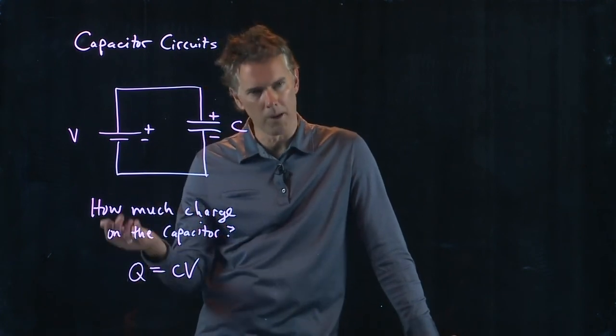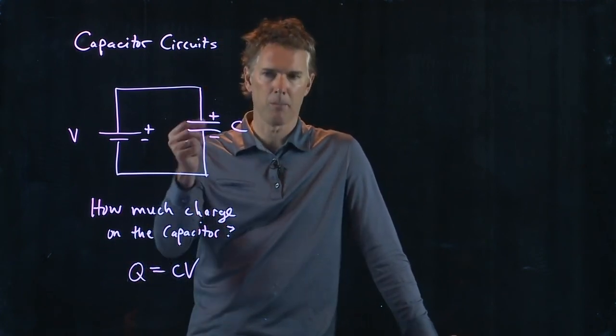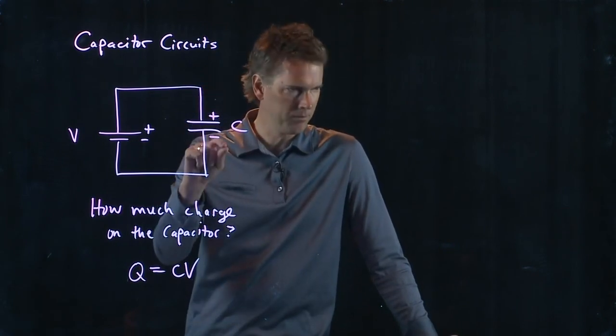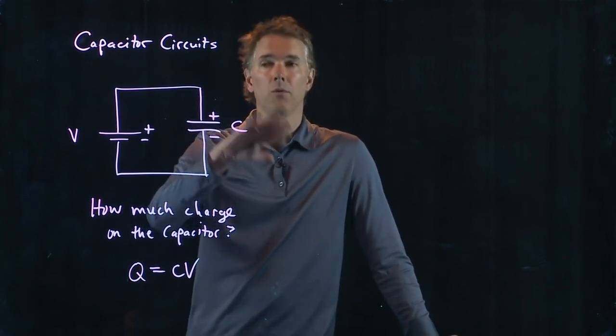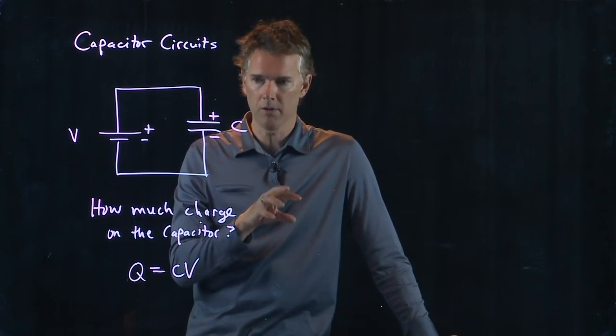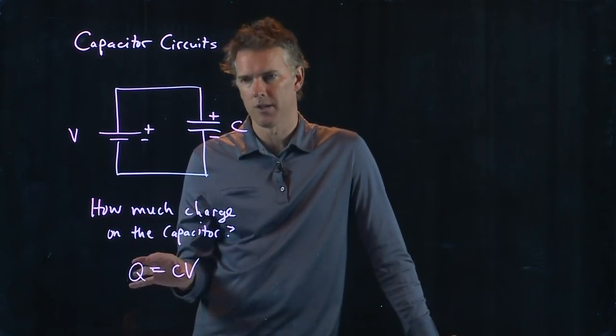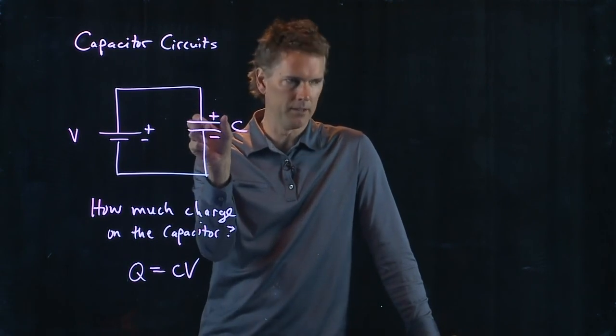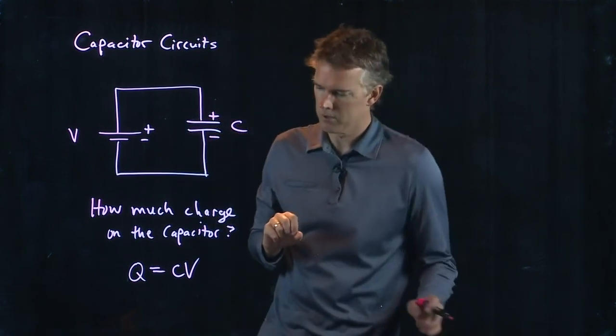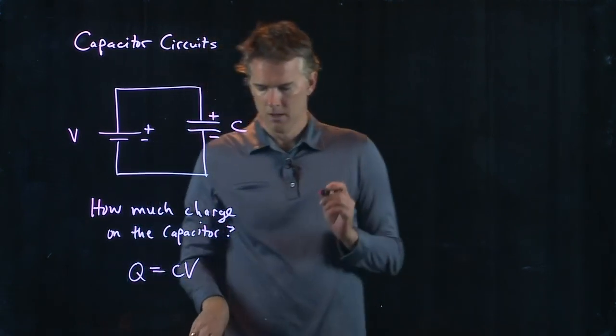So what's the charge on the capacitor? CV. This is the charge on one plate. Obviously, the capacitor has equal and opposite charge on the other plate. So the net charge on the whole thing would be zero. But when we say what's the charge on the capacitor, we mean what's the charge on one side of it? What's that positive charge? It's Q.